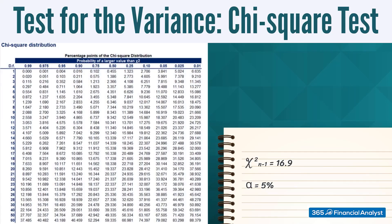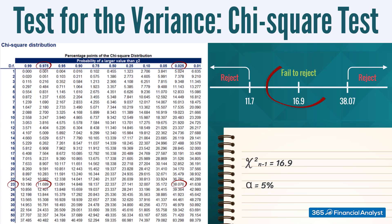For a significance level of 5%, and given that this is a two-sided test, the chi-square table tells us that we need to compare with a chi-statistic of 11.689 for the lower interval, and with a chi-square statistic of 38.076 for the upper interval. Given that our test is in the middle of this interval, we fail to reject the null hypothesis.